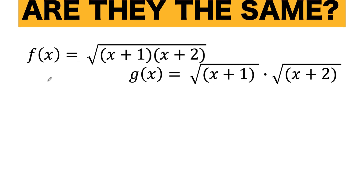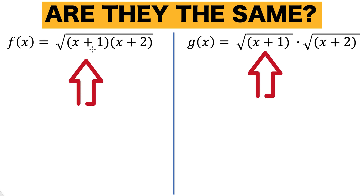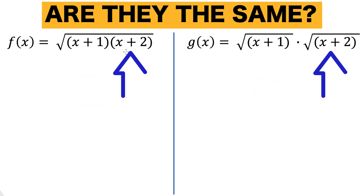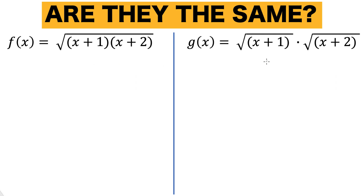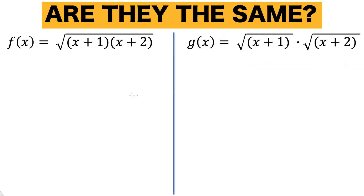Now let's solve this problem together. Let's analyze the two functions. Notice that the quantities (x+1) and (x+2) are common to both functions. The only difference is that for f, these two quantities are both under one radical symbol — the square root — whereas for g, these two quantities are in separate radicals.